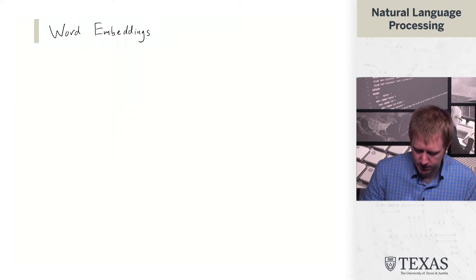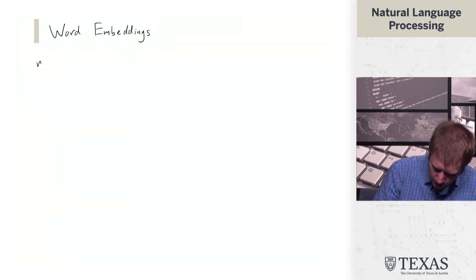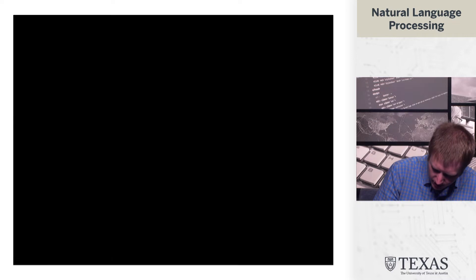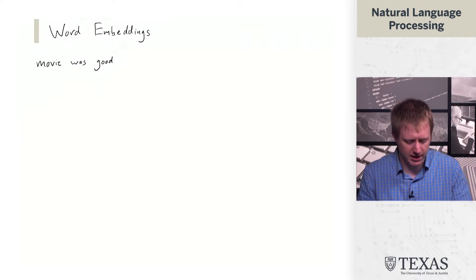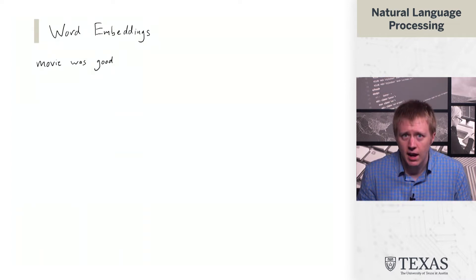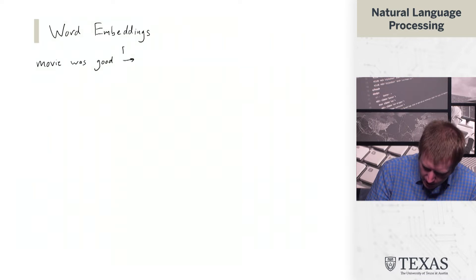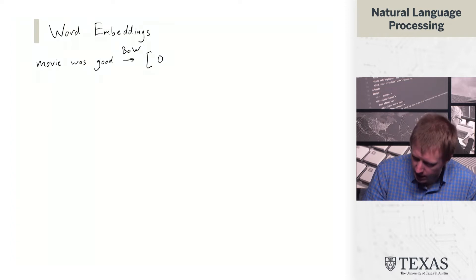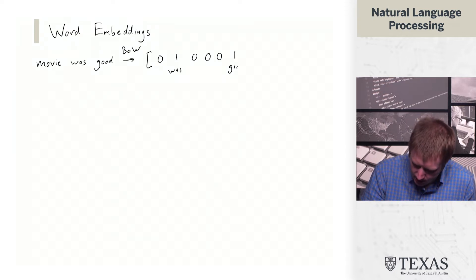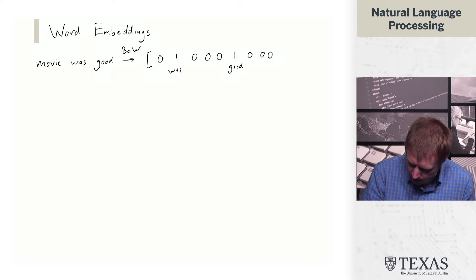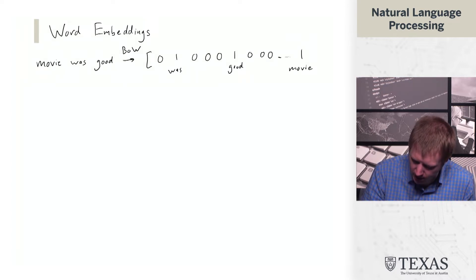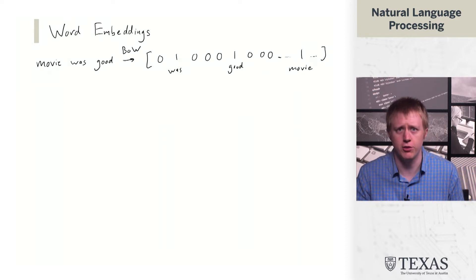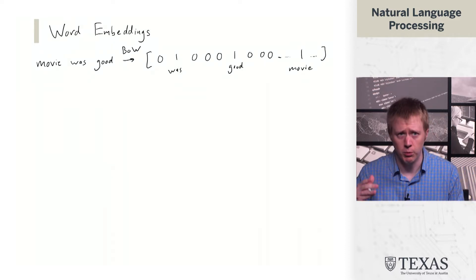To set up the basic idea, we're going to start with a very simple sentiment example sentence, where we can map 'movie was good' into a bag-of-words representation using unigrams. We can think about that as some space where you've got a whole bunch of zeros and then three ones in this vector that correspond to the positions of the words which occur in the sentence.